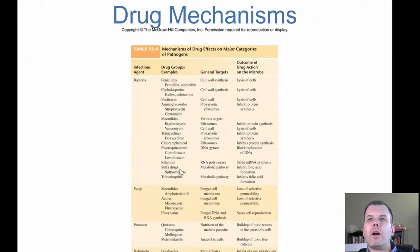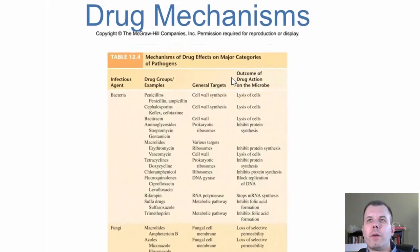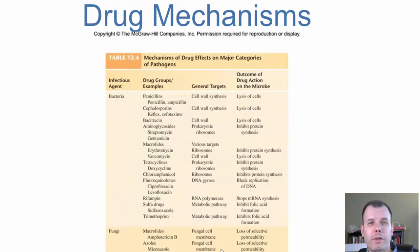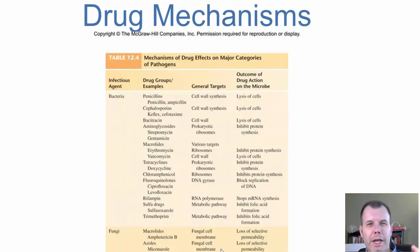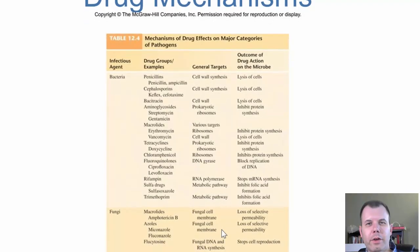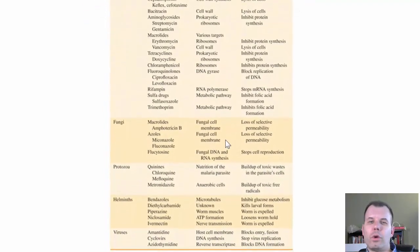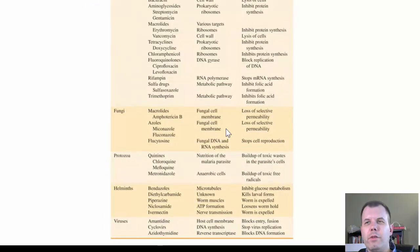Here again are a number of the different drugs showing the targets and the lysis of cells. I'm not going to expect you to know specific drugs. I want you to understand the different families of drugs and what they do. So if we're talking about penicillins and cephalosporins, where do they target? Or if I mention glycosides, those target proteins. This will make a lot more sense as we go along.